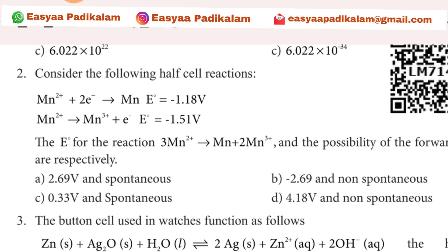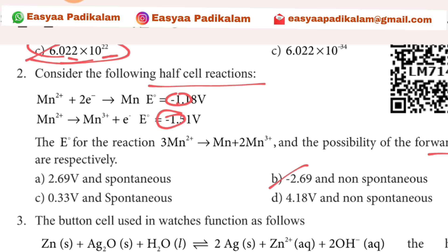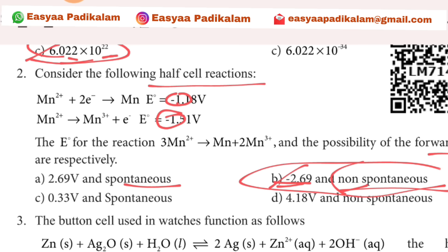Second question: consider the following half-cell reactions. Possibility of forward reaction. Here we have minus and here we have minus. So the answer is minus 2.69. Minus is negative, but spontaneous negative is non-spontaneous. So the answer is minus 2.69 and non-spontaneous.